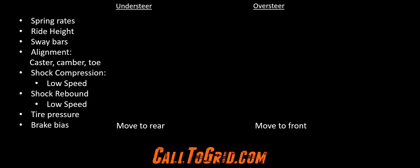Tire pressure is the next easy area we can look at, and if your car already has a pretty good basic setup, this is where you will most likely spend most of your time tuning at the track. For understeer on entry to mid-corner, consider decreasing front pressure. For oversteer mid-corner to exit, decrease rear tire pressure. If this still hasn't fixed your issue, we now look to the shocks.